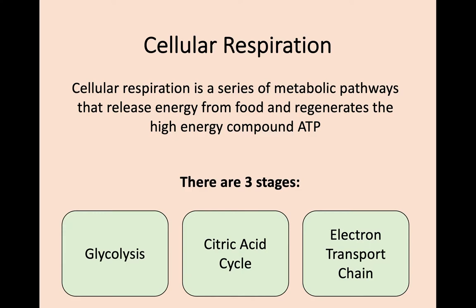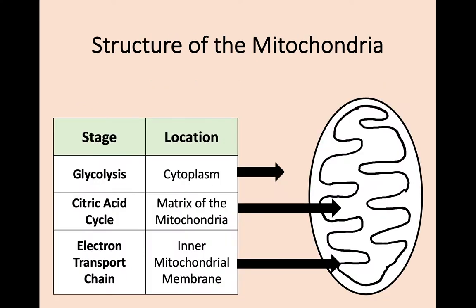Let's have a closer look at where each of these reactions takes place within a cell. In the previous key area we looked at the mitochondria, and we'll take a closer look at its structure here — specifically the fact that a mitochondria has two membranes, the inner and the outer. Glycolysis does not take place in the mitochondria; it takes place in the cytoplasm, which is the location of most cellular reactions.